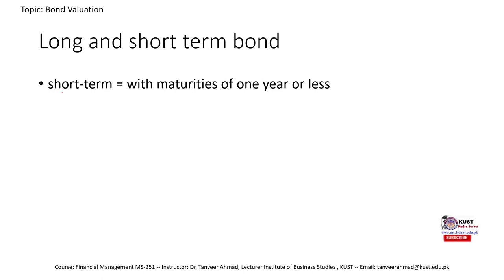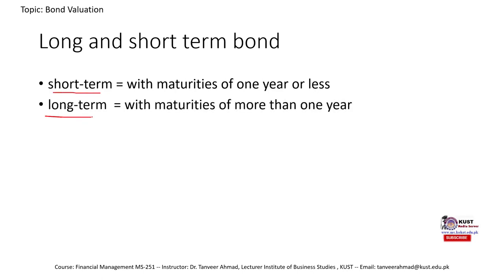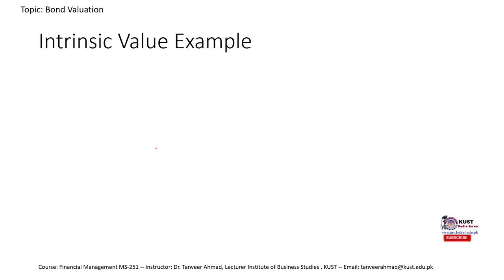We also have short-term bonds and long-term bonds. Short-term bonds are those with a maturity of one year or less, and long-term bonds are those with a maturity of more than one year. Now let's move on to the main concept: intrinsic value, which is central to understanding bond evaluation.